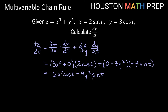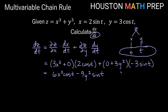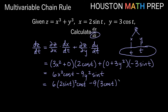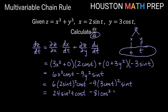We have three variables here. We want the derivative with respect to t, so we convert x and y into expressions in t. Substituting x equals 2 sin(t) and y equals 3 cos(t): 6 times (2 sin t)² cos(t) minus 9 times (3 cos t)² sin(t). Squaring gives 6 times 4 sin²(t) cos(t) minus 9 times 9 cos²(t) sin(t), which simplifies to 24 sin²(t) cos(t) minus 81 cos²(t) sin(t).